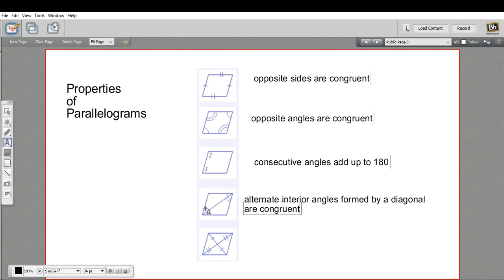So this angle right here is congruent to this angle right here, this angle right here congruent to this angle right here.